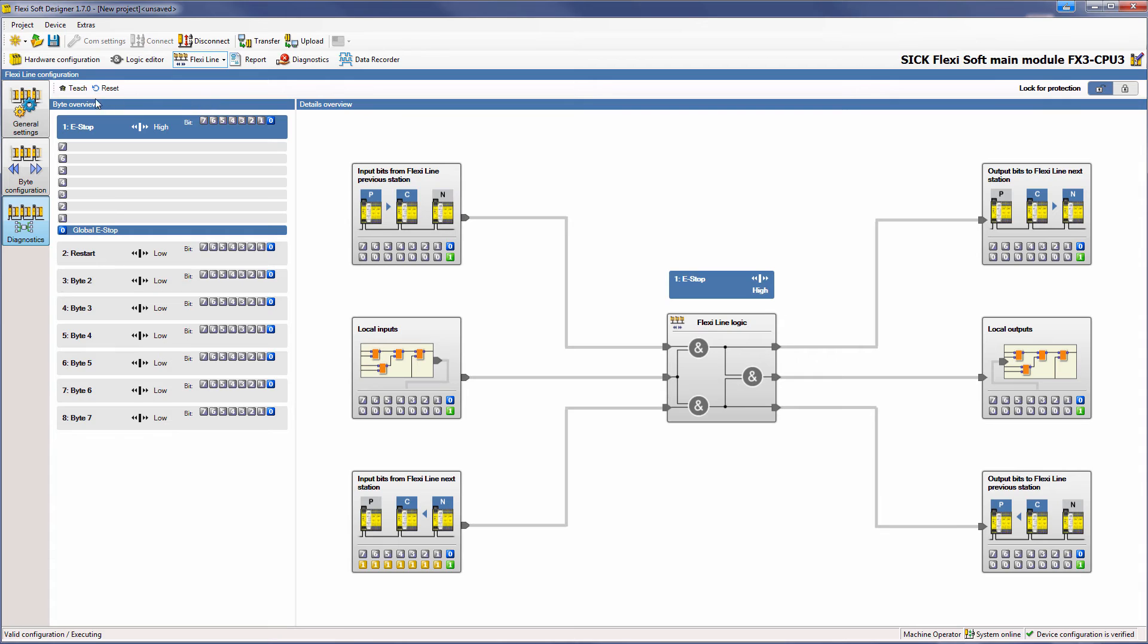With a simple click, the topology of the system is checked and confirmed. Although I am connected to the first station, you can see here information from a previous station. This is only a virtual station, which delivers the default value for each byte in order to perform the evaluation of the Flexi-Line logic.